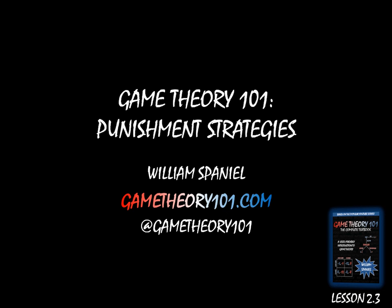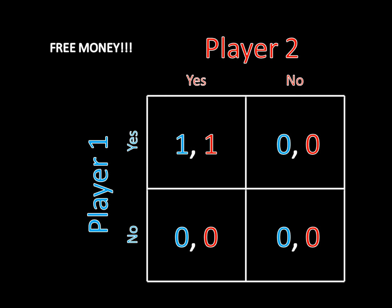You might remember this game, the free money game. This is one of those really strange games that has an even number of equilibria. One equilibrium is where both player 1 and player 2 say yes, and the other equilibrium is where both player 1 and player 2 say no. There are no mixed strategy Nash equilibria here — there are only those two pure strategy Nash equilibria.